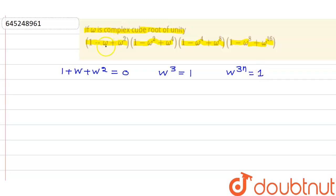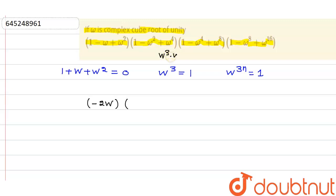Now, the first factor: since 1 + ω² = -ω, we get 1 - ω + ω² = -2ω. For the second factor, ω⁴ = ω³ · ω = ω, so 1 - ω² + ω⁴ becomes 1 + ω - ω², and since 1 + ω = -ω², this equals -2ω².